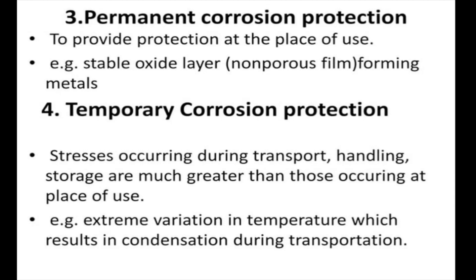This is the third type of the prevention method which is called as permanent corrosion protection. Here, protection is provided at the place of use through a stable oxide layer which is a non-porous film-forming metal. There are various methods, including applying a film of similar material in oxide form, chemical protection, or providing a metallizing agent on top of the metal or alloy piece.